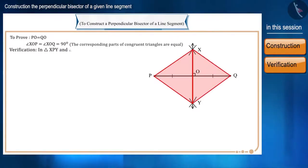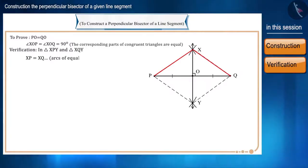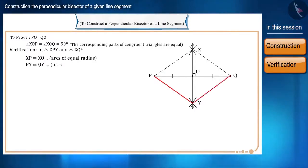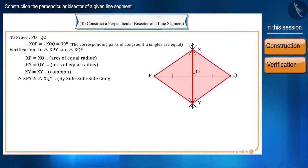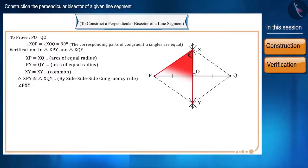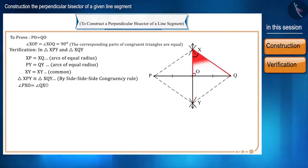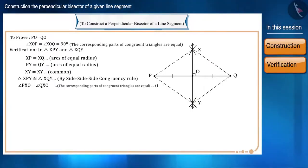In triangle XPY and triangle XQY: side XP is equal to side XQ because these are arcs of equal radius. Similarly, side PY is equal to side QY because these are arcs of equal radius, and side XY is equal to side XY as a common side. Therefore, triangle XPY and triangle XQY are congruent by the side-side-side congruency rule. Therefore, angle PXY is equal to angle QXY because the corresponding parts of congruent triangles are equal. Let this be equation 1.